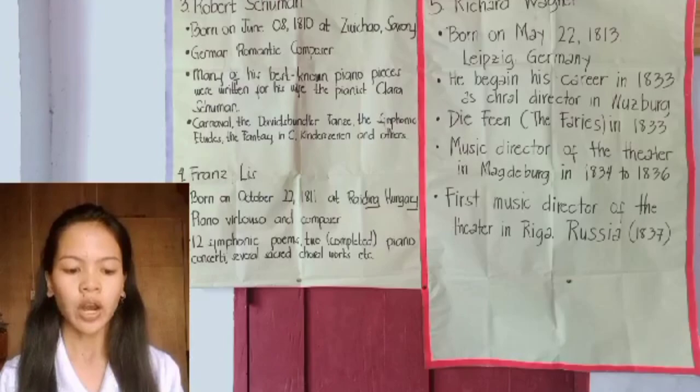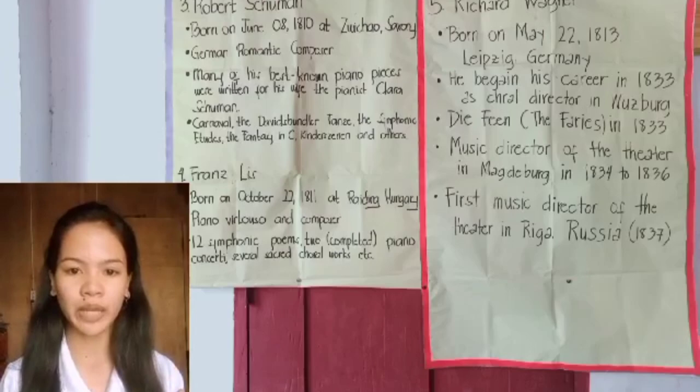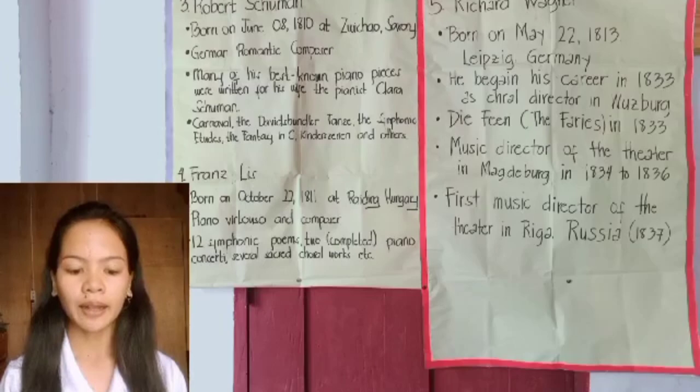Robert Schumann was born on June 8, 1810 and is a German Romantic composer, also known as Robert Alexander Schumann. He is renowned particularly for his piano music, songs (Lieder), and orchestral music. Many of his best-known piano pieces were written for his wife Clara Schumann. His most characteristic work is introverted and tends to record precise moments and moods, though another side is evident in the forceful approach and strongly rhythmic patterns of works such as the Toccata and Piano Concerto.